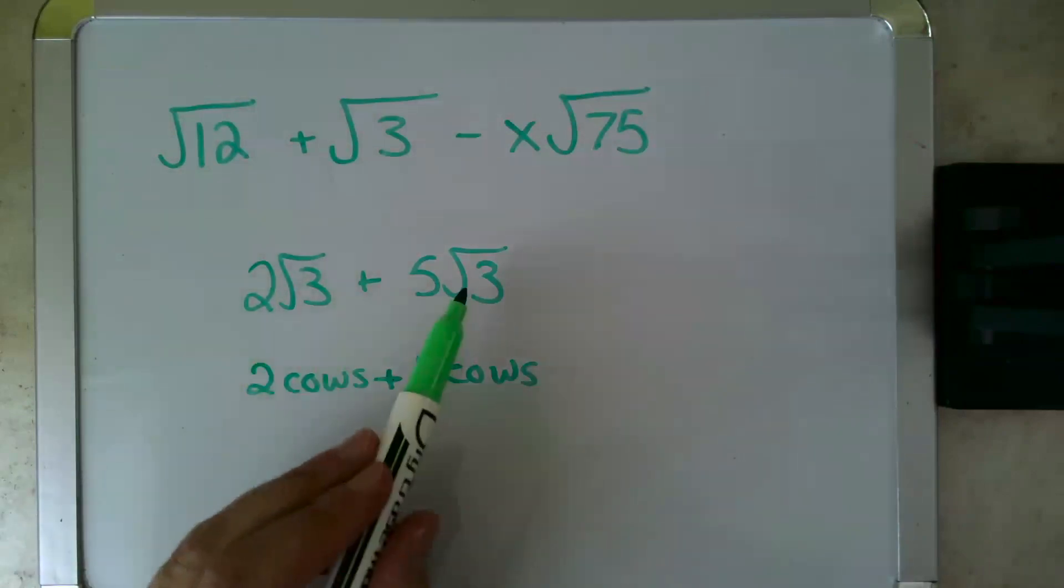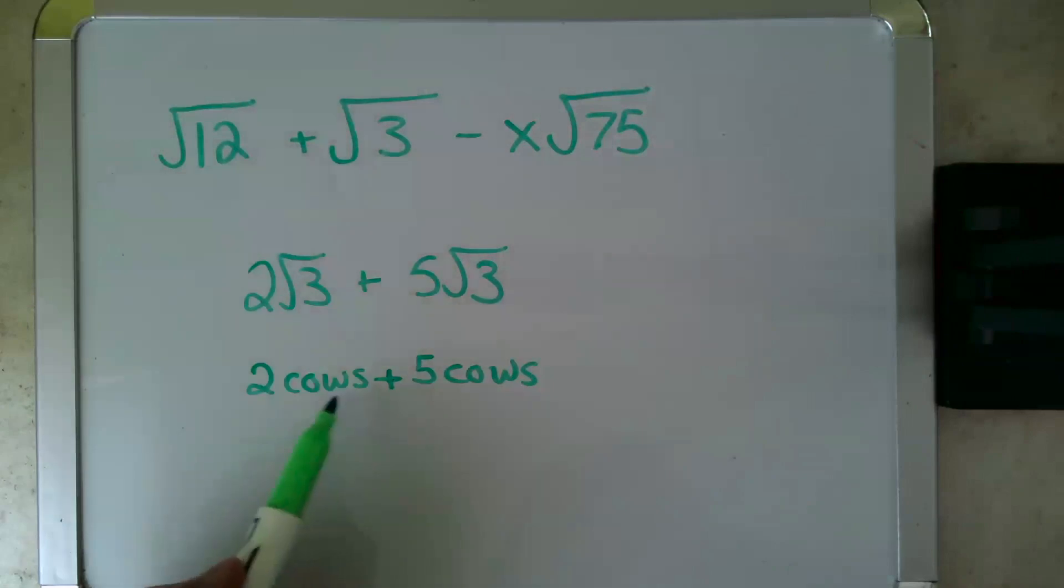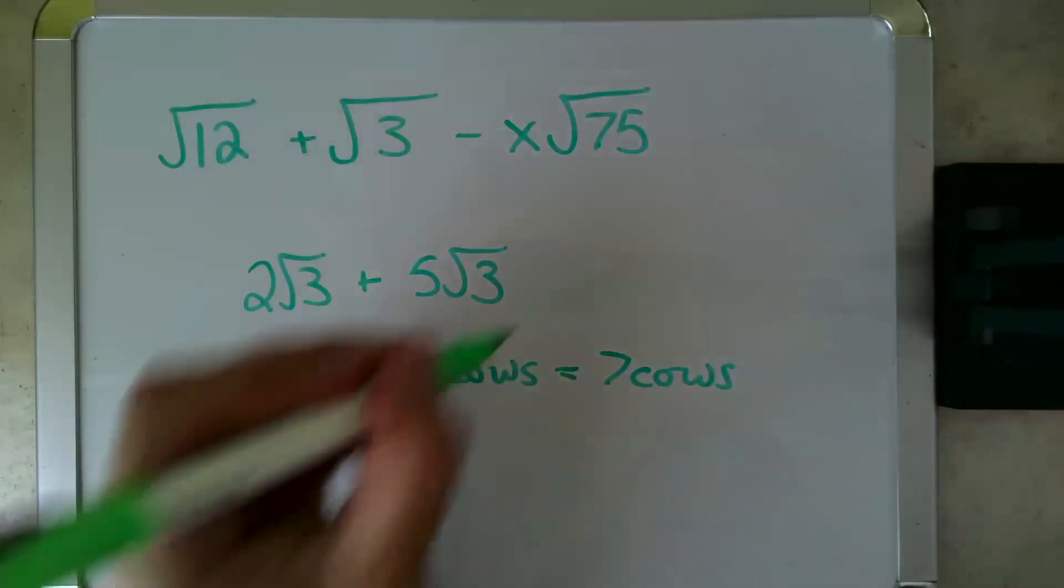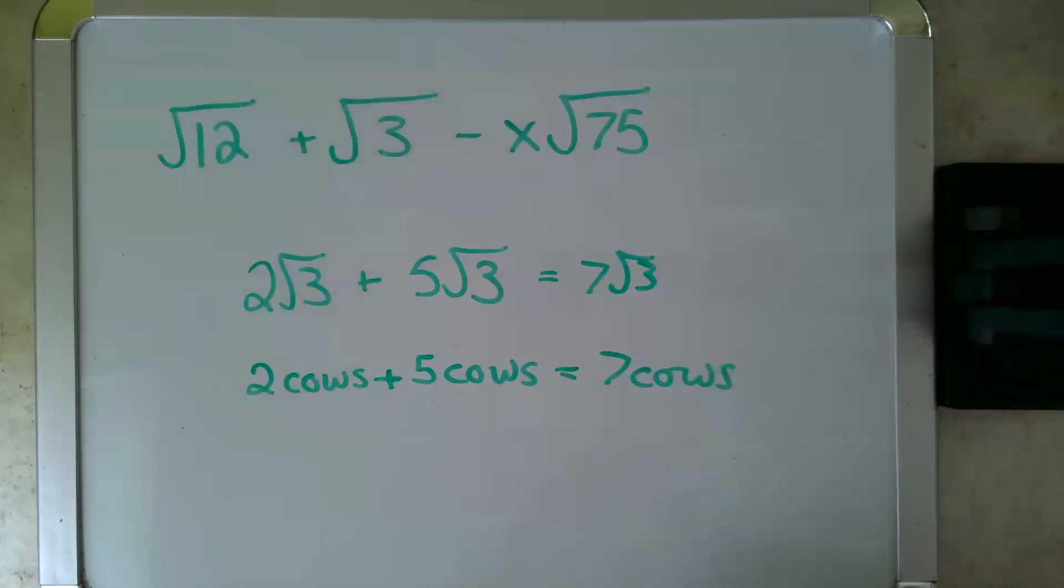Because root 3, that's just an entity like a cow. Root 3 happens to be 1.7, but we're adding 2 of them to 5 of them. So in the same way that 2 cows plus 5 cows equals 7 cows, 2 root 3s plus 5 root 3s would equal 7 root 3s.